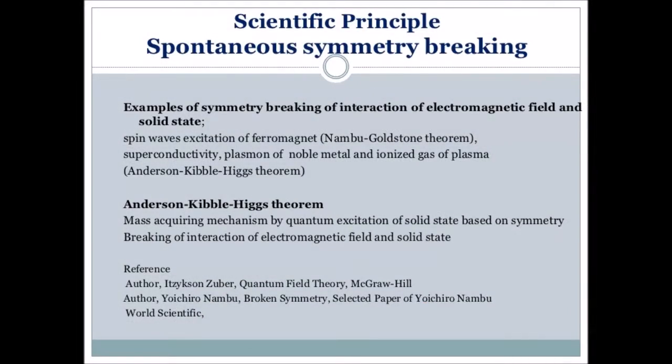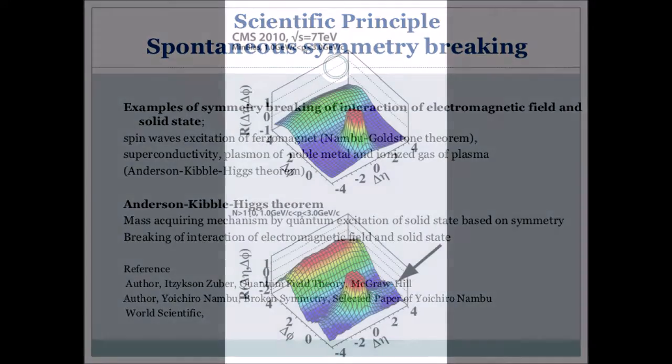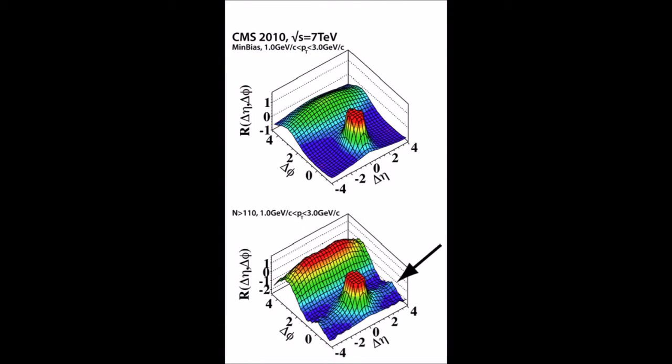A dissipative structure is characterized by the spontaneous appearance of symmetry breaking and the formation of complex, sometimes chaotic, structures where interacting particles exhibit long-range correlations.